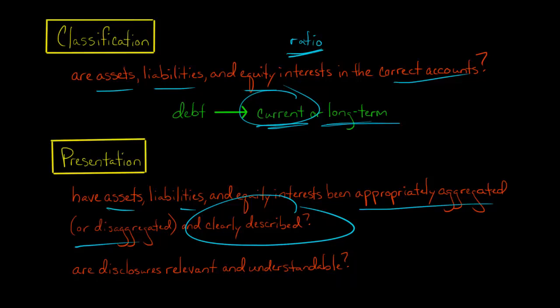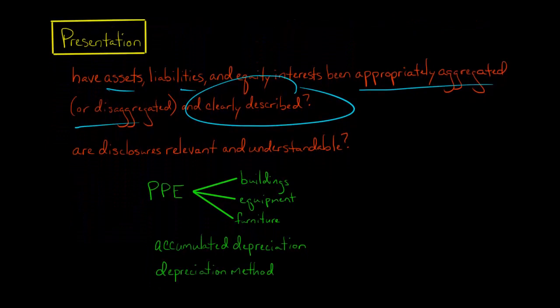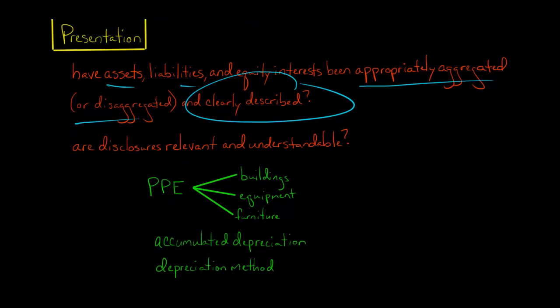Remember, what value do the financial statements have and the notes to the financial statements have if an investor can't look at them and understand what's going on? So if we take, for example, the property plant and equipment account, you'll see the ending balance in a property plant and equipment account. It'll be in the balance sheet, and it'll say property plant and equipment.